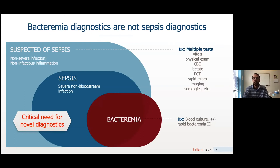Patients may have non-severe infections or non-infectious inflammation, and we use a battery of tests to evaluate them — vitals, physical exam, CBC, lactate, maybe procalcitonin, microbiology, imaging, serologies, etc. Most of the time we really don't know whether or not a patient has an infection.